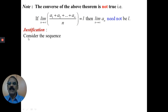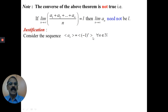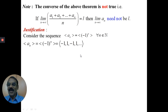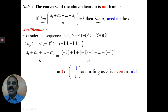To illustrate this, consider the well-known sequence a_n whose nth term is (-1)^n, for all n belonging to ℕ. That is, the sequence a_n is: -1, 1, -1, 1, -1, 1, and so on. We know that it is an oscillating sequence.